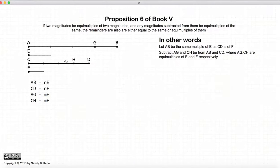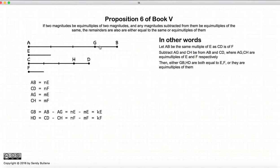where they are also equal multiples of E and F respectively. And the remainders, GB and HD, are either equal to E and F, or they are equal multiples of E and F.